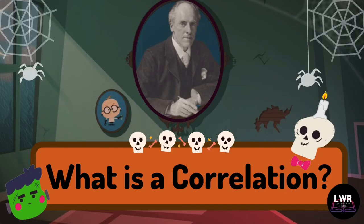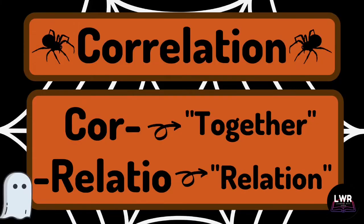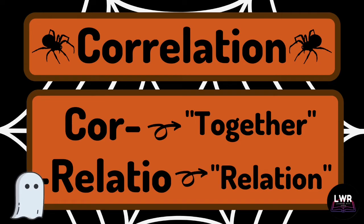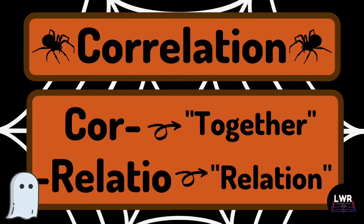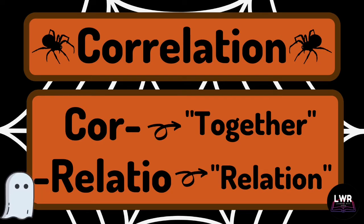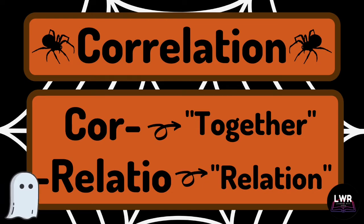So what is a correlation? The word correlation is derived from the Latin word 'cor,' meaning together, and 'relatio,' which means relation. To put it in simple words, correlation is the mutual relationship or connection between two or more things.